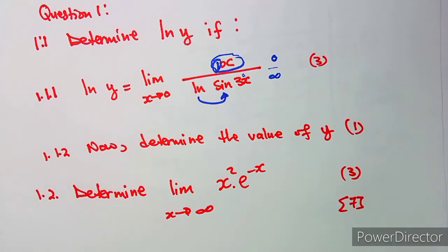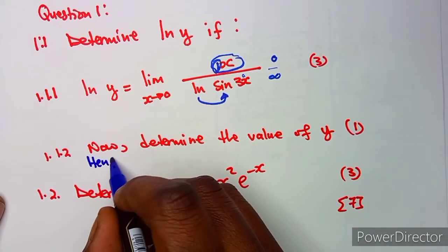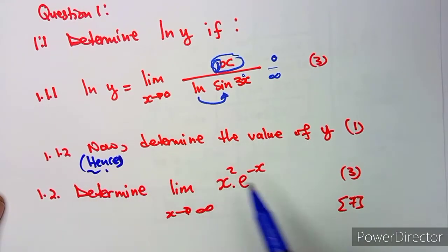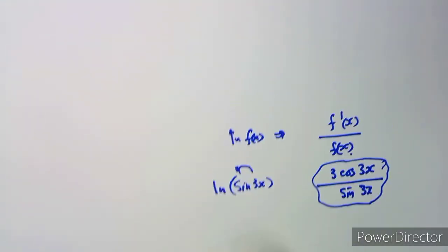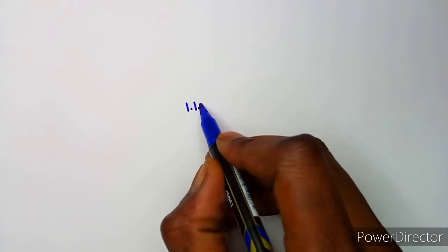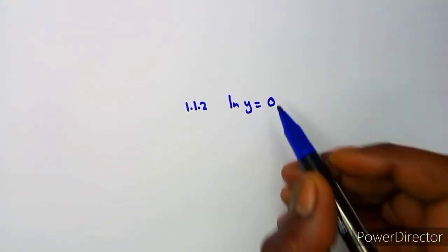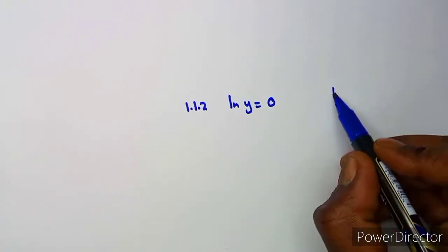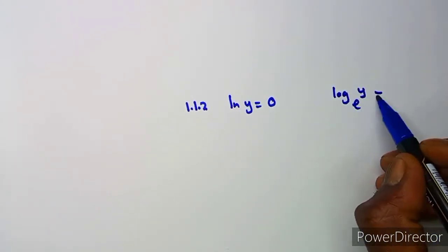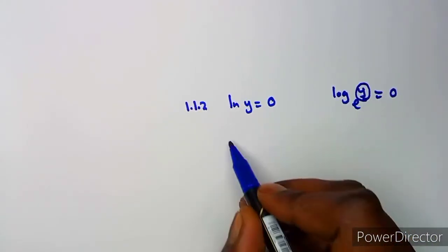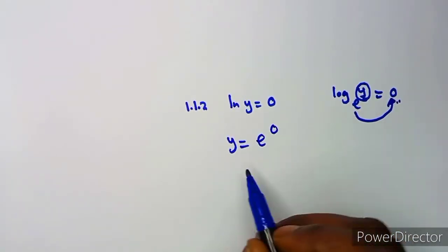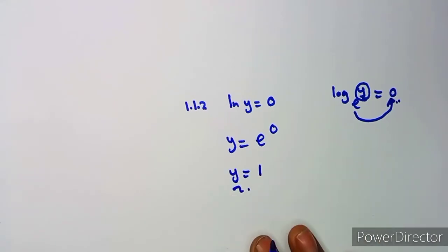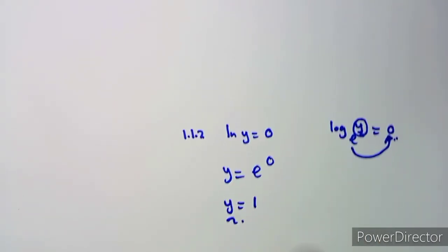Now determine the value of y. This is a continuation: from part one we obtained ln(y) = 0. Since ln means the logarithm of that number in base e, y equals e to the exponent of zero. Any number to the exponent zero is one, so y equals one.